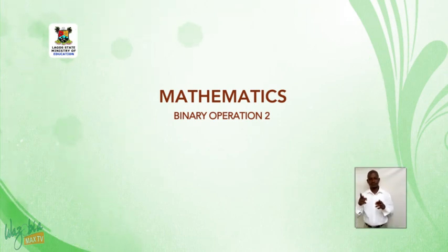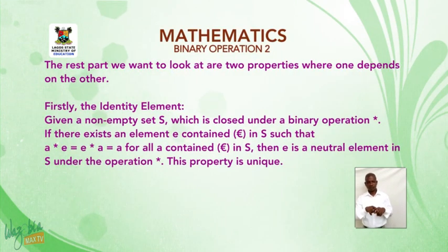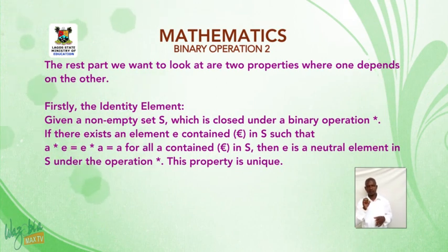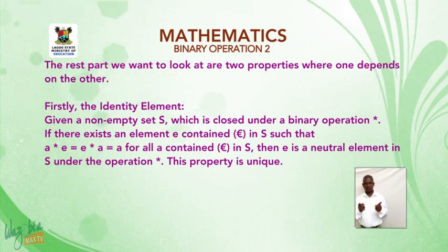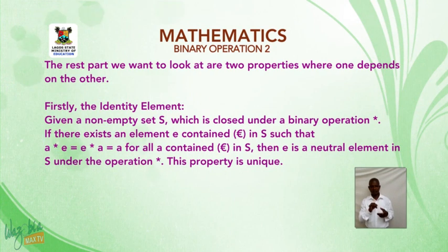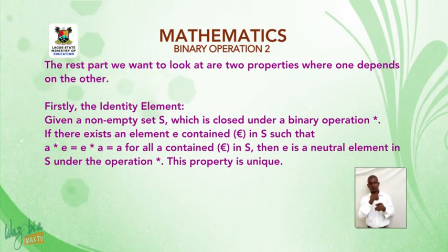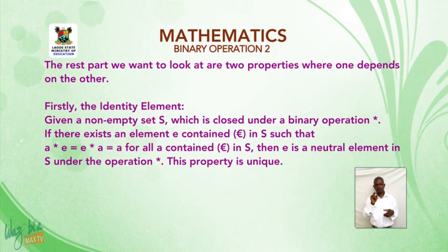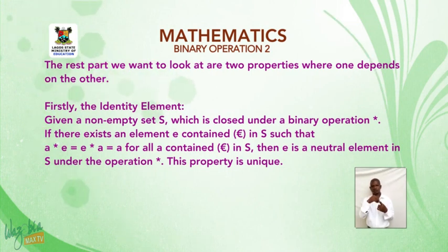The next two properties we want to look at are identity element and inverse element, where one depends on the other. The identity element: given a non-empty set S which is closed under a binary operation star, if there exists an element e contained in S such that a★e = e★a = a for all a contained in S, then e is the neutral (identity) element in S under the operation star. This property is unique.